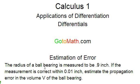We're going to be given a ball bearing, measured to be 0.9 inches. I guess I should have put 0 in front of that. Alright, 0.9 inches. If the measurement is correct within 0.01 inches, we're going to estimate the propagation error in the volume V of the ball bearing.